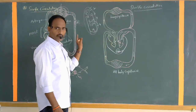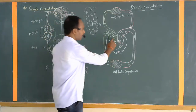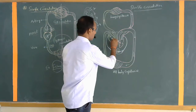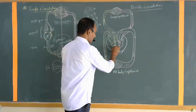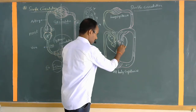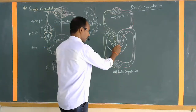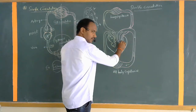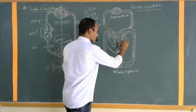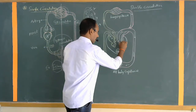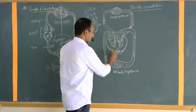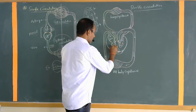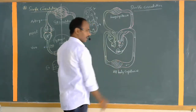We are discussing four chambers of the heart, but the circulation pattern is common. The upper two chambers are called auricles or atria, and the lower two are ventricles. Specifically: left auricle, right auricle, right ventricle, and left ventricle.